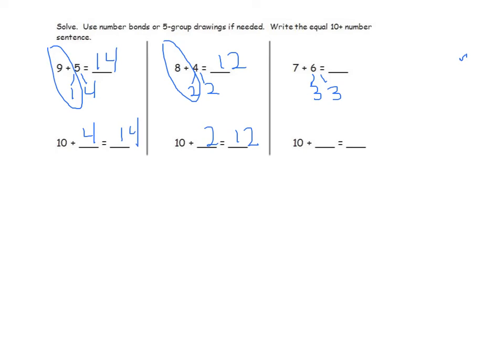I will then circle 7 plus 3 to make 10 and add the remaining 3 to get 13. The new make 10 sentence would be 10 plus 3 equals 13.